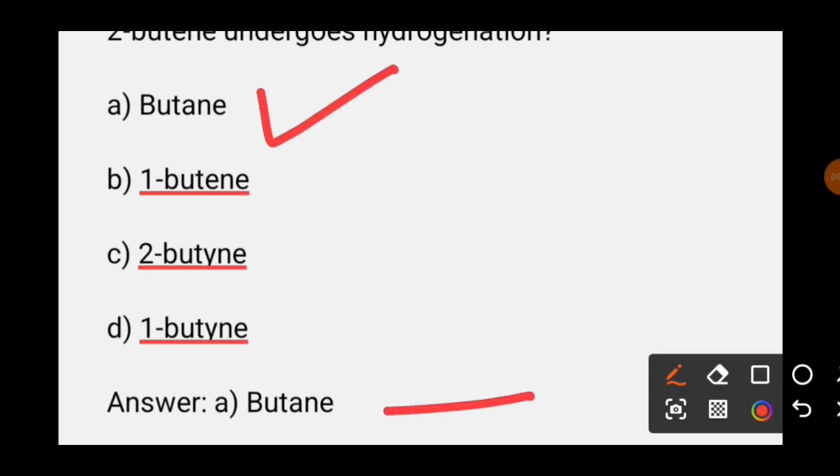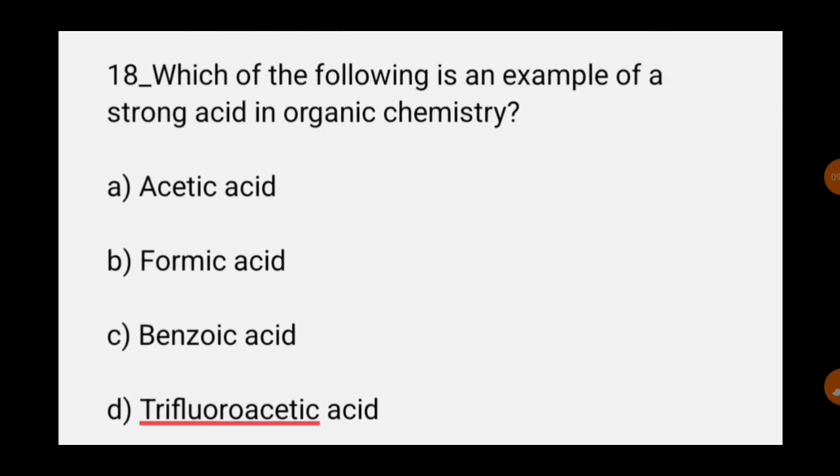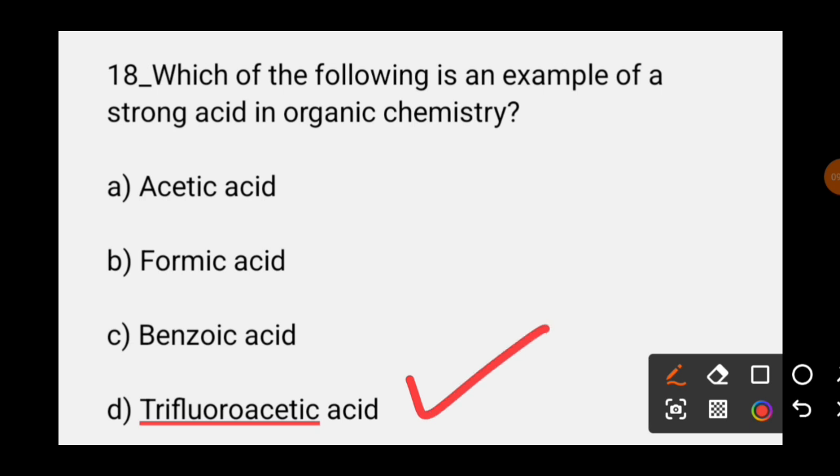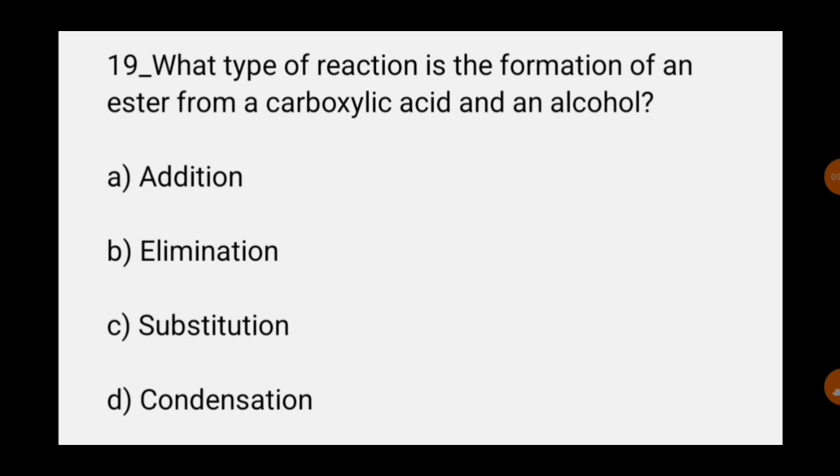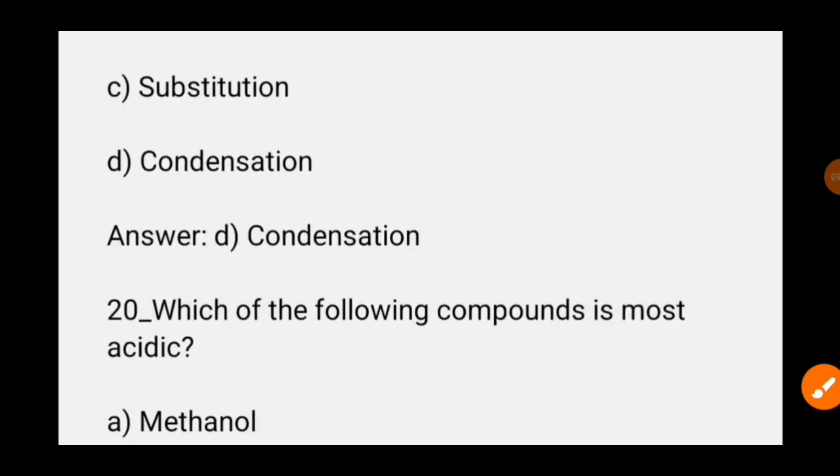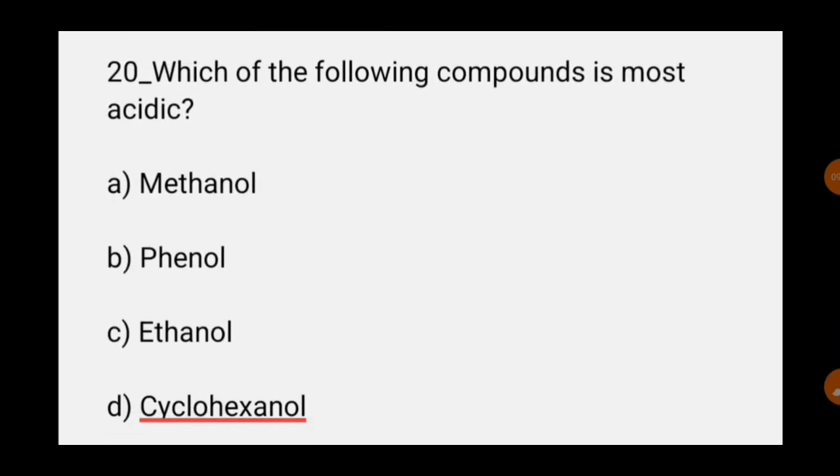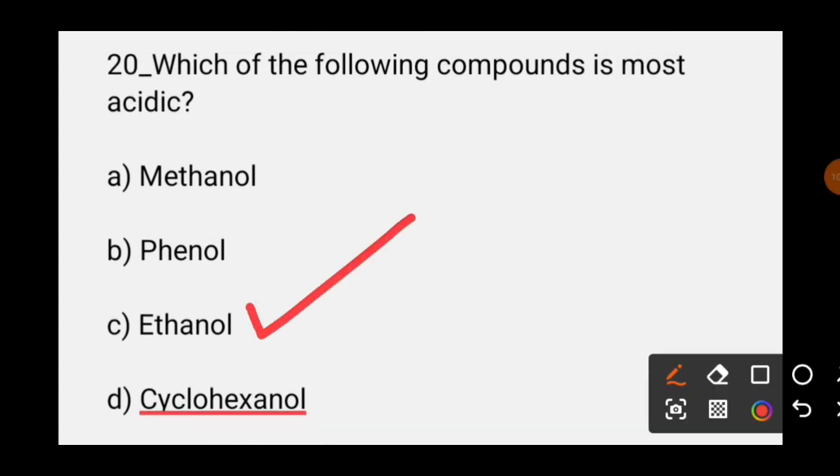MCQ number eighteen: Which is an example of strong acid in organic chemistry? The correct answer is option D, trifluoroacetic acid. MCQ number nineteen: What type of reaction is the formation of an ester from a carboxylic acid and an alcohol? The correct answer is option D, condensation.